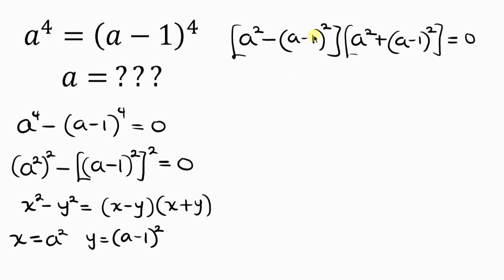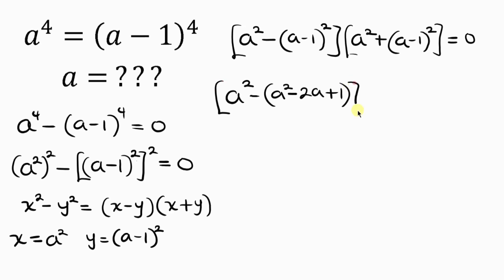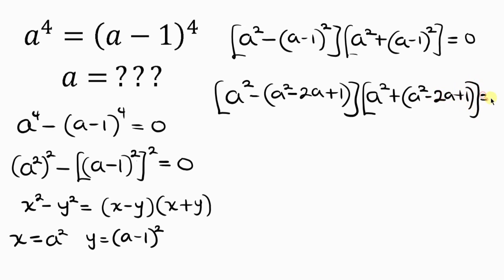Now let's expand the bracket inside. We have A squared minus — opening up that bracket — A squared minus 2A plus 1. Then times the second bracket: A squared plus — opening up that bracket — A squared minus 2A plus 1. Equal to 0.